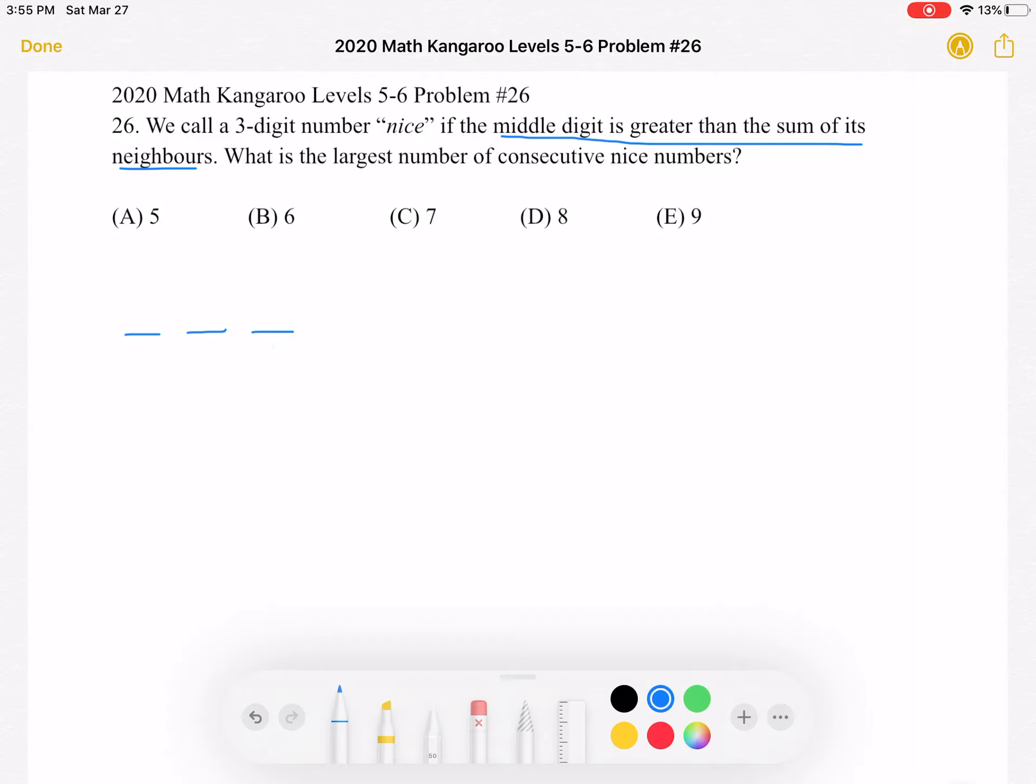But what about 8? Well, we run into a similar problem because the greatest possible middle number would be 9, and the smallest possible hundreds number would be 1. And 9, the middle number, is equal to the sum of its neighbors, 1 plus 8. It's not greater than. So we cannot have 8 either.